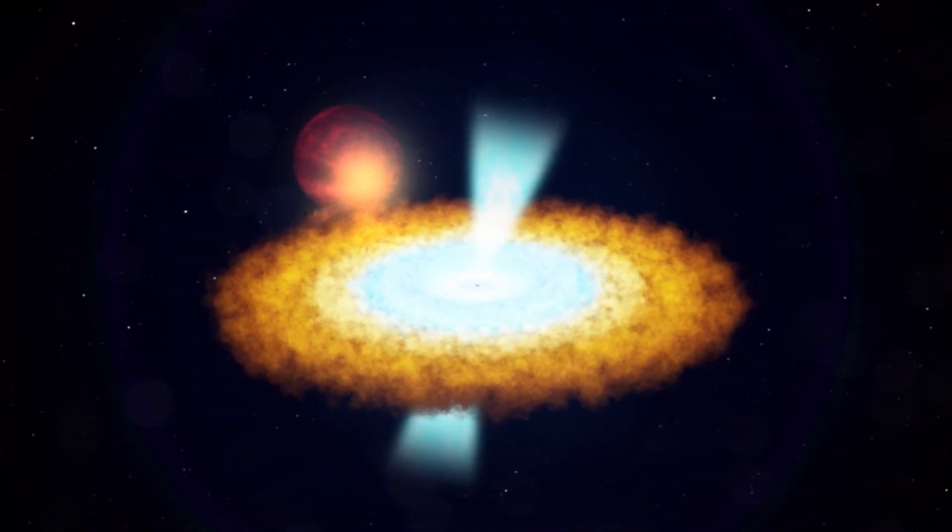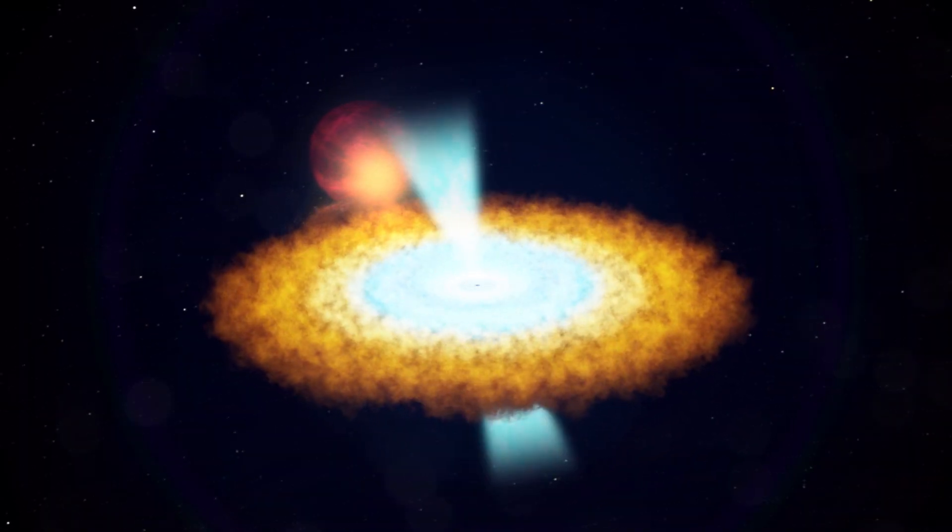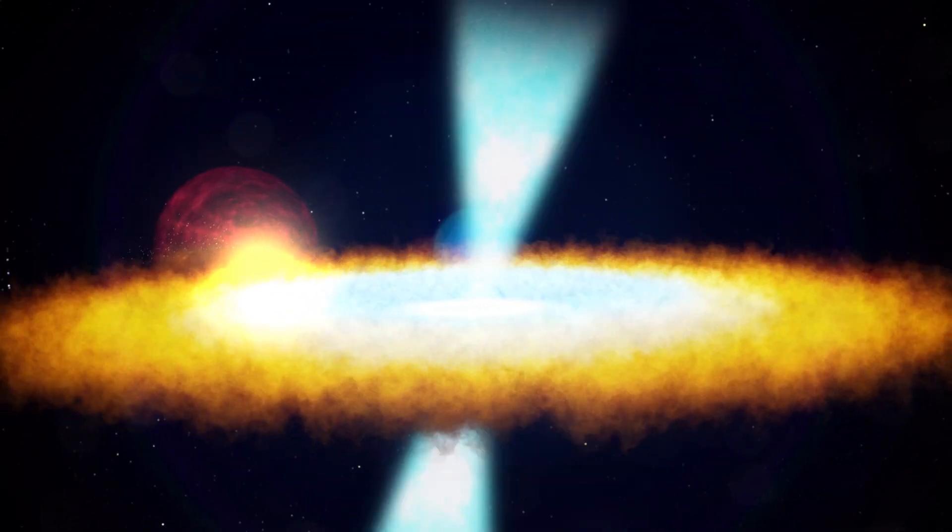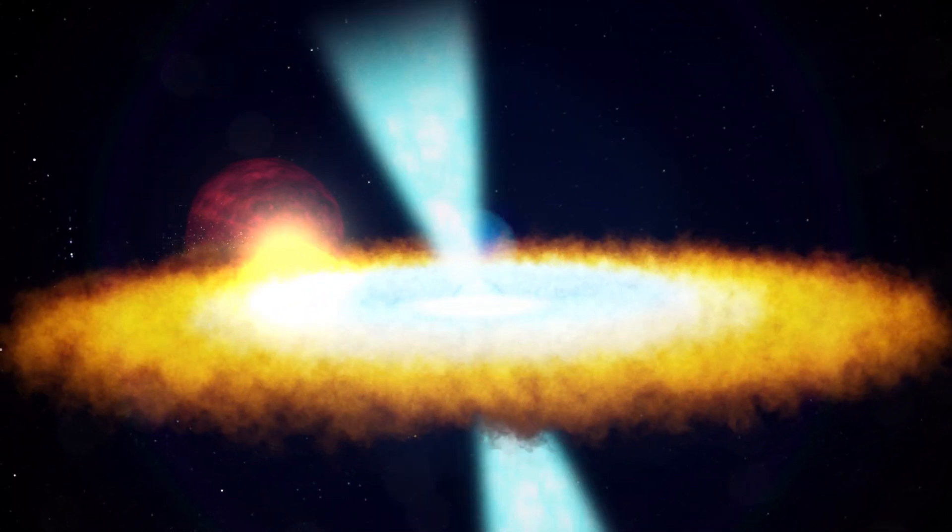Hydrogen gas from the brown dwarf forms an accretion disk around the pulsar. Every few years, the disk becomes unstable. This sends a rush of gas toward the pulsar that makes it brighten in X-rays.